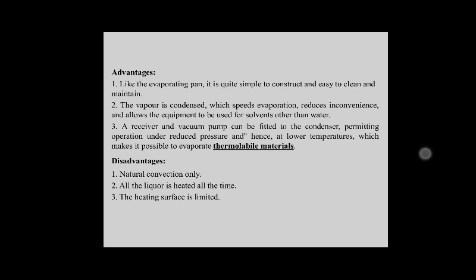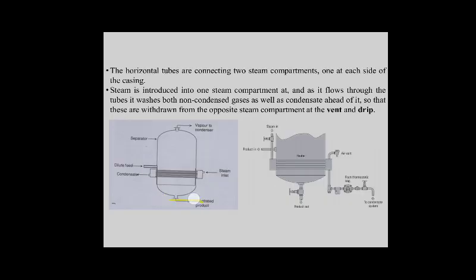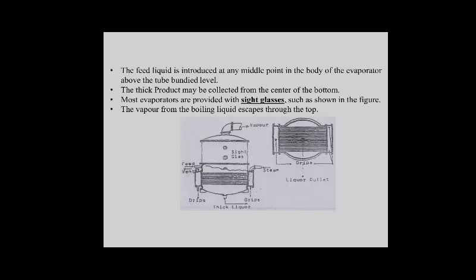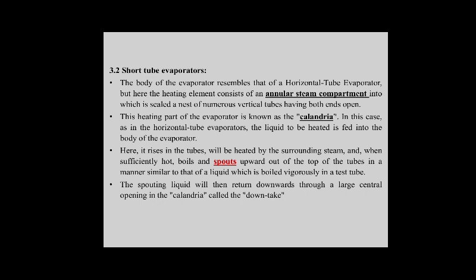Tube evaporators include horizontal and vertical tube evaporators. In the horizontal tube evaporator, the feed liquid is introduced into the device and steam pipes heat the liquid to make it boil and evaporate. Advantages: relatively low initial cost, requires low headroom, and easy to install; can be used as batch or continuous evaporators. Disadvantages: poor liquor circulation, unsuitable for viscous liquids, and unsuitable for liquors that crystallize on concentration, like magnesium sulfate or calcium sulfate.